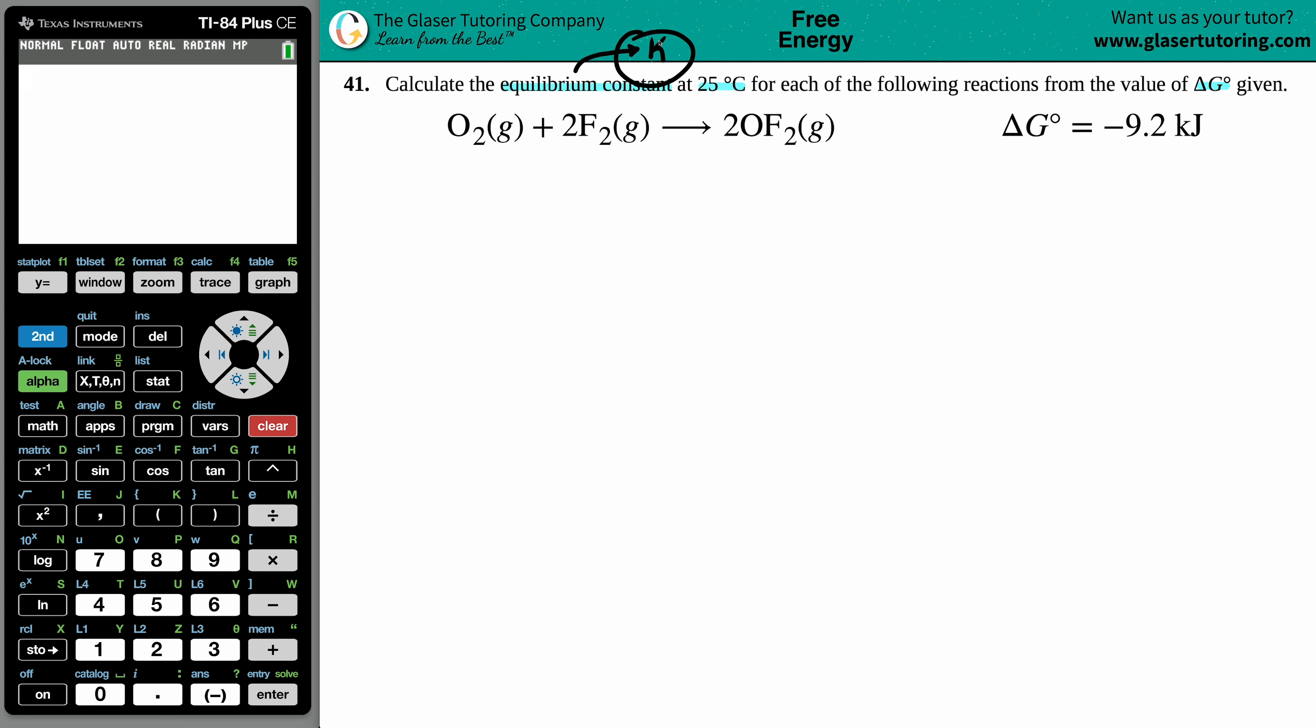In this case, we're solving for the equilibrium constant K, so it's best to memorize the equation as this: K equals e, which is found on the calculator, raised to the negative delta G divided by RT. So we're solving for K, which means that we should know the delta G, R, and T.